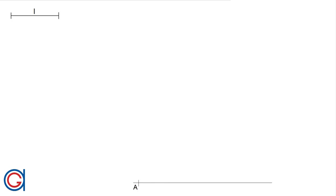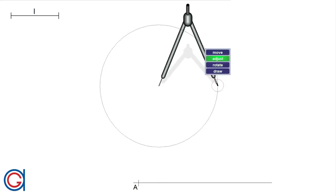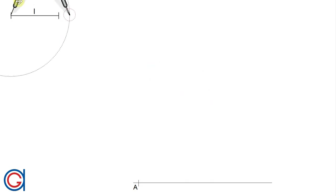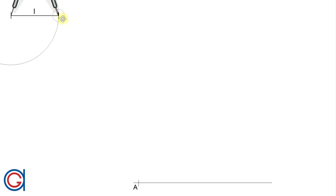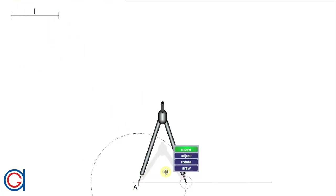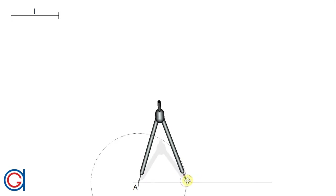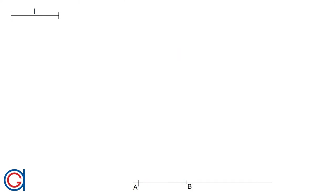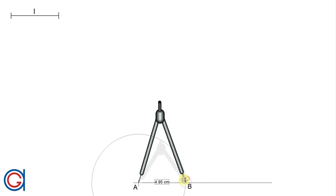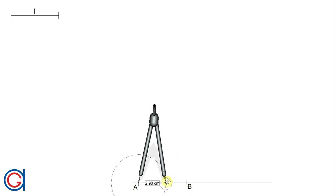Now setting the compass to the length of the given side L at the top of the screen, which is the side of the decagon that we want to draw. Setting the compass on point A, we are going to transport this length onto the horizontal line — setting the compass onto the length L first, and now transporting this onto the horizontal line, setting the compass on A and scribing an arc to the right to obtain a new point B.